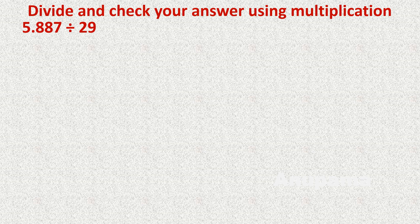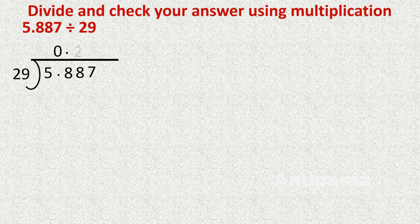Let us do one more division question: 5.887 divided by 29. We write 29 as the divisor and 5.887 as the dividend. We cannot divide 5 by 29 because 5 is less than 29, so we write 0 and place a decimal point. Now it is 58. 29 twos are 58. We subtract: 58 minus 58 is 0.